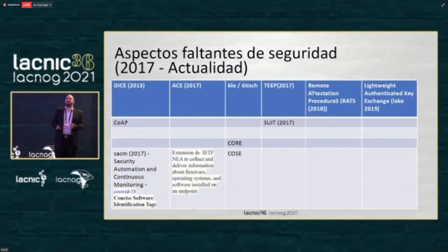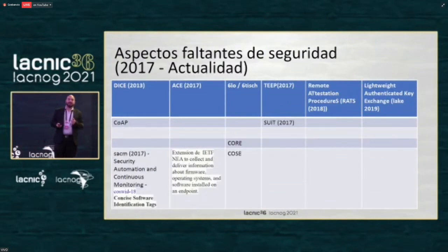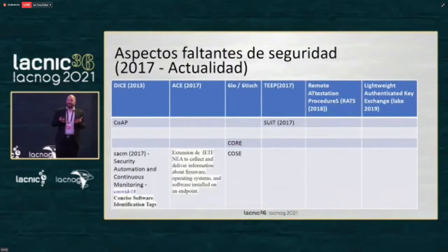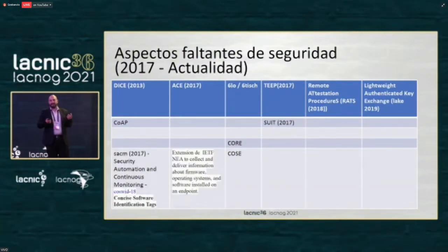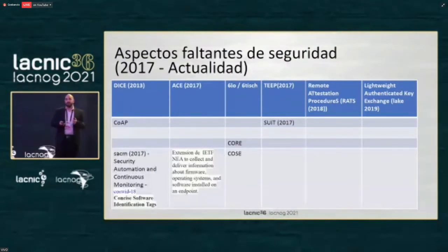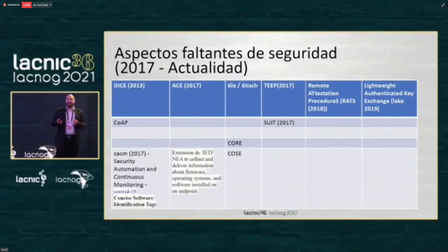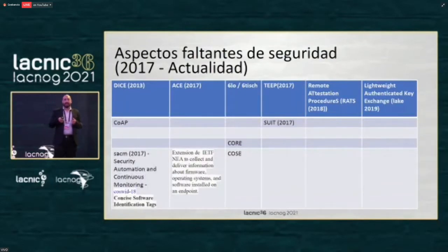Then some groups started talking about applications for the Internet of Things, such as the CoAP group. They started working with objects similar to JSON but called CBOR, which are essential for these restricted environments and sensors. They also addressed transport issues — using UDP instead of TCP for these sensors, since they exchange packets with very little information. UDP was sufficient and CoAP at the application level works well for these restricted environments, minimizing the HTTP protocol with some exceptions.